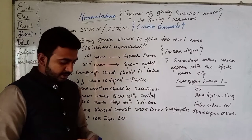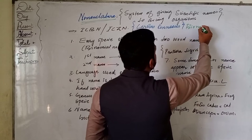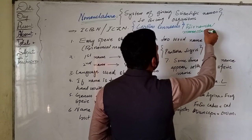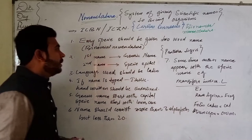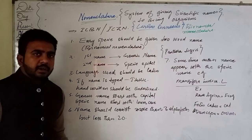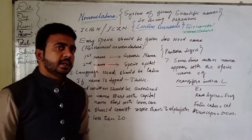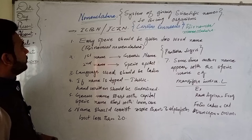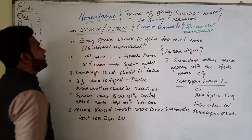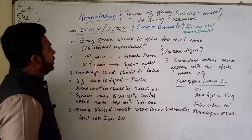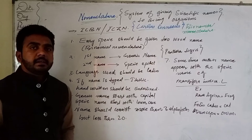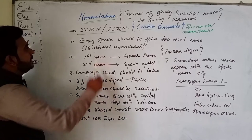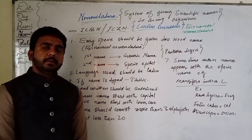Nomenclature was introduced by different scientists, but the particular system known as binomial nomenclature was introduced by a Swedish naturalist and explorer, Carolus Linnaeus. The scientific names of organisms are decided by organizations like ICBN (International Council of Botanical Nomenclature) and ICZN (International Council of Zoological Nomenclature), to avoid confusion and to maintain a standard name for each organism.